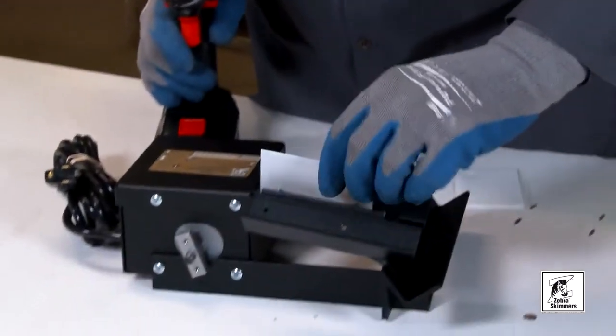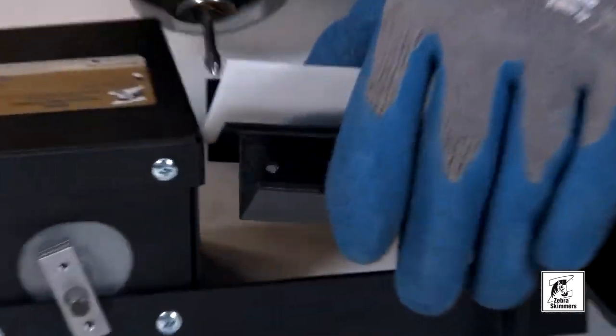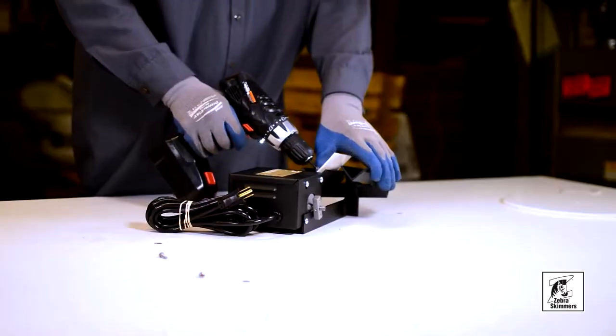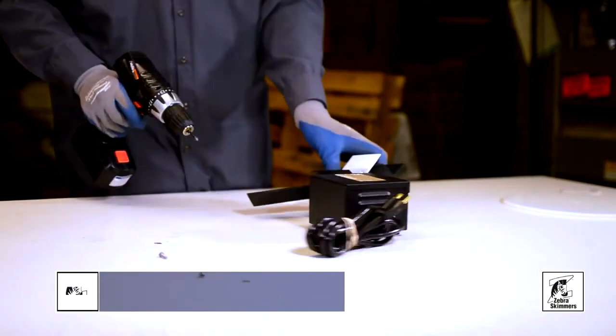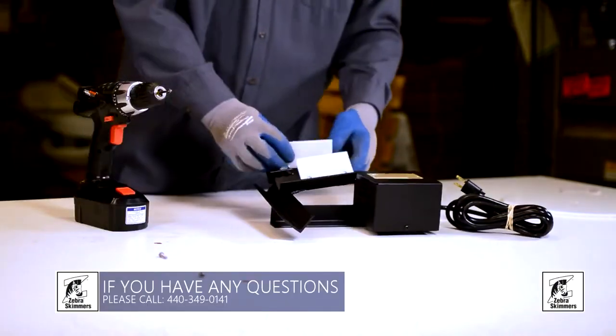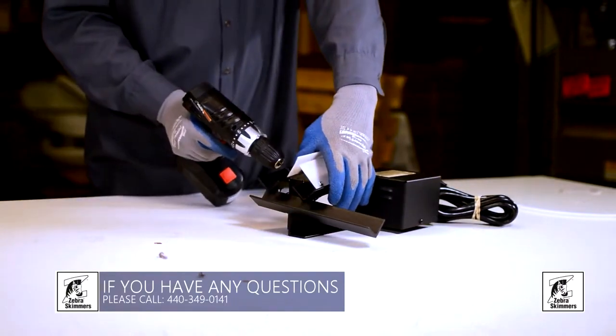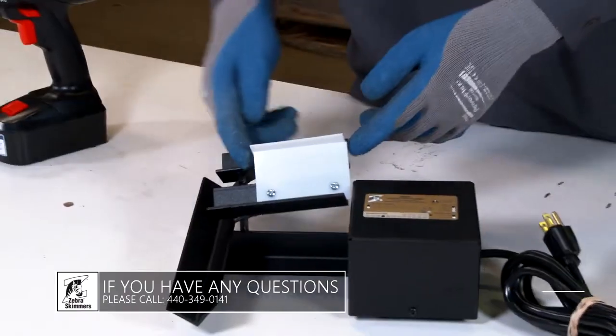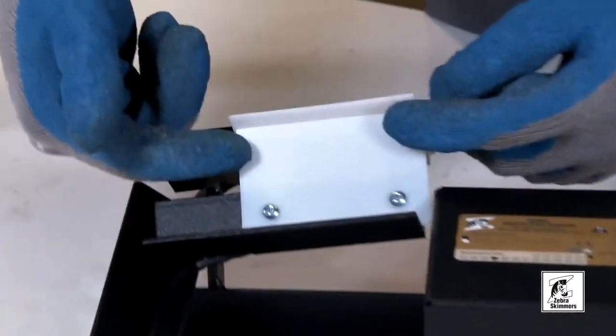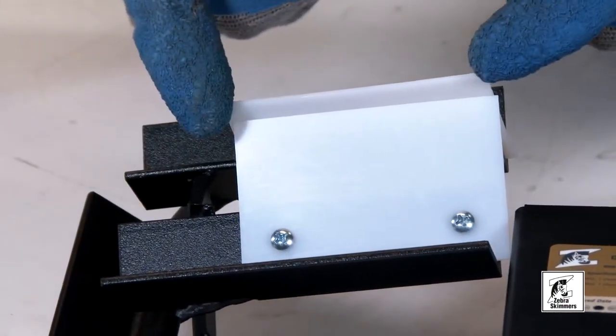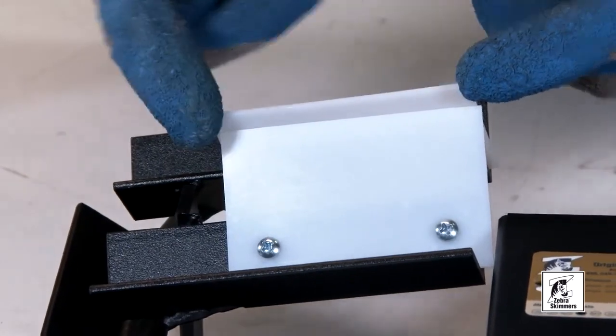Now we'll reassemble the new wipers. Both wipers are the same size, so it doesn't matter which wiper you put on which side. Notice this wiper sits a little lower than the top wiper. It's designed purposely like that for skimming purposes.